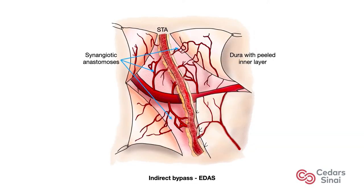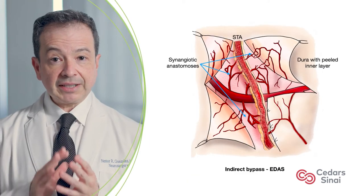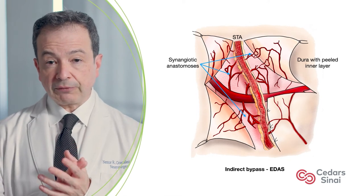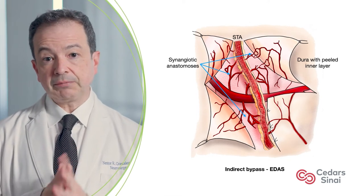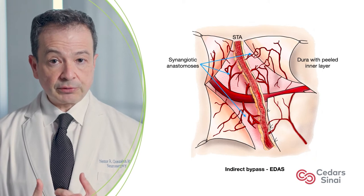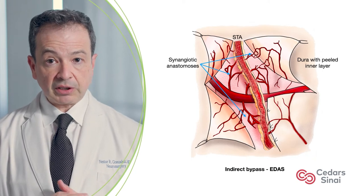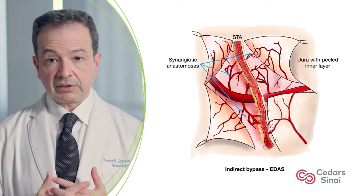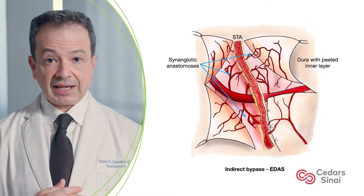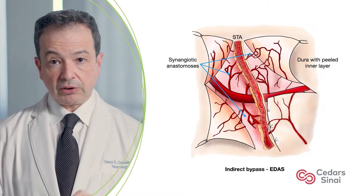Indirect bypasses, like encephaloduroarteriosynangiosis or EDAS, are built by the opposition of vascularized tissues to the surface of the cerebral vasculature using scalp arteries like the superficial temporal artery, temporalis muscle, galea, or dura mater that has been peeled or inverted.